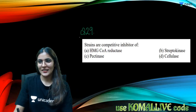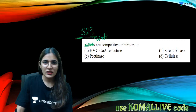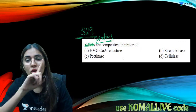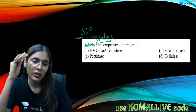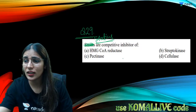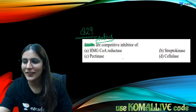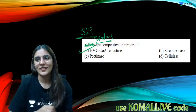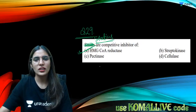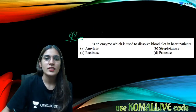Question twenty-nine: statins are competitive inhibitors of HMG-CoA reductase — the enzyme responsible for cholesterol synthesis. Streptokinase is a clot buster produced by Streptococcus bacteria, not an enzyme inhibitor. Cellulase and pectinase come from Aspergillus. The answer is HMG-CoA reductase.